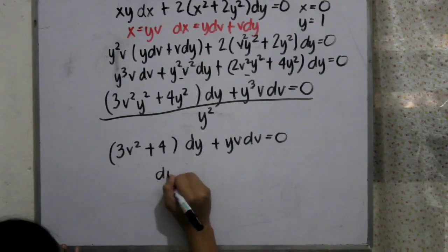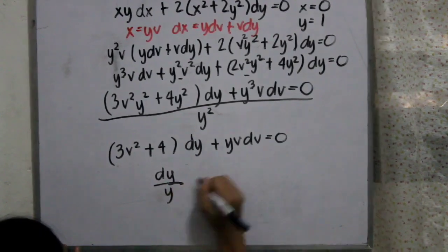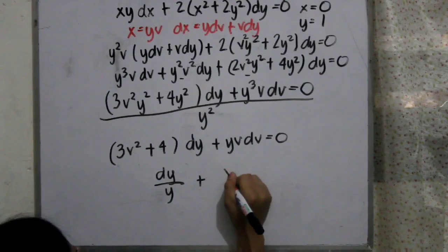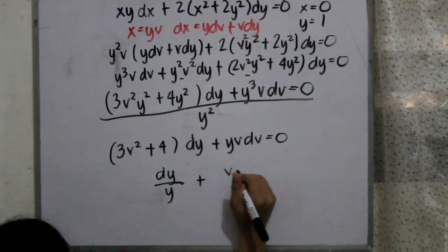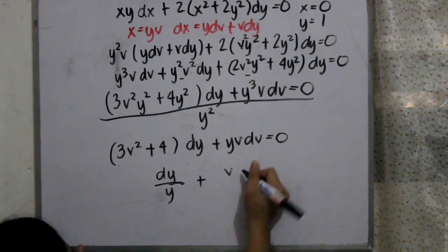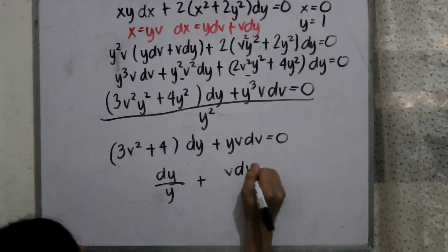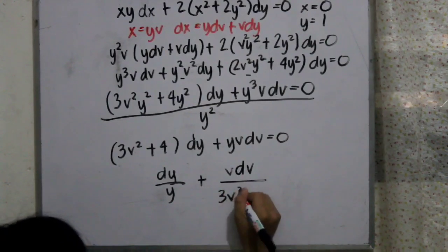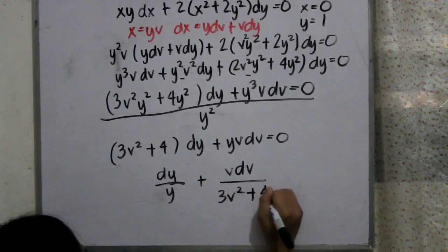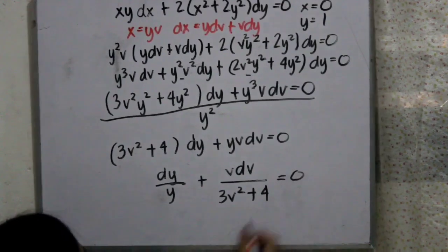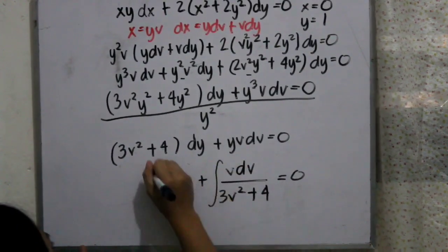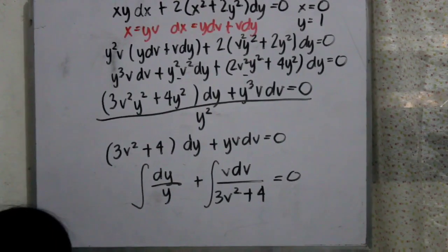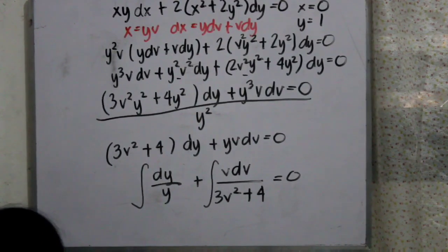By manipulating, we will obtain dy over y plus v·dv all over 3v² plus 4. We are just grouping into like variables — that's why we manipulated it.